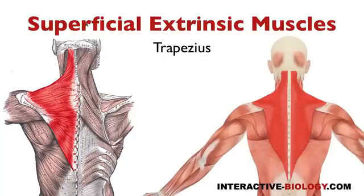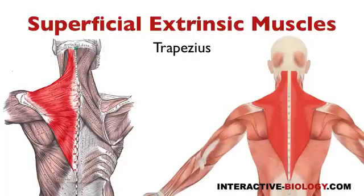When it comes to the origins of trapezius, this is probably one of the longest ones to remember. The first thing I want to point out is this little bump at the back of the skull on the occipital bone, and that is called the external occipital protuberance. That's part of the origins.